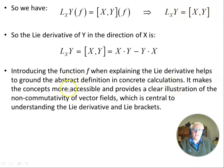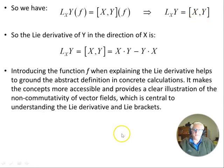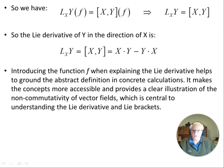So to summarize: the Lie derivative of a smooth function f in the direction of X is just the directional derivative X(f), and the Lie derivative of a vector Y with respect to another vector X is the commutator of the two. Introducing the function f when explaining the Lie derivative helps ground the abstract definition in concrete calculations, makes the concept more accessible, and provides a clear illustration of the non-commutativity of vector fields — which is essential to understanding the Lie derivative and Lie brackets. That's what we set out to achieve. Thank you for watching.